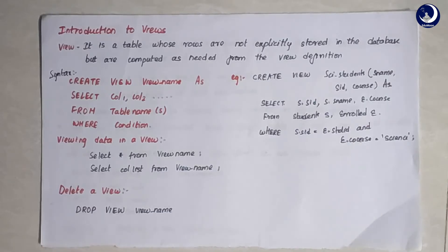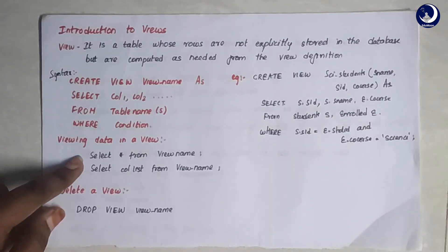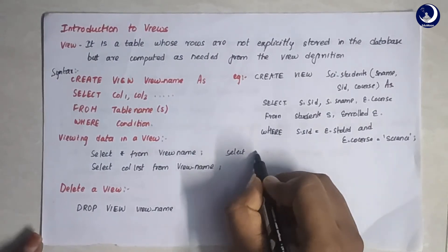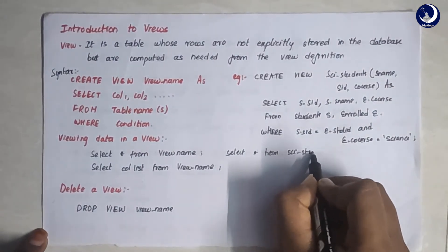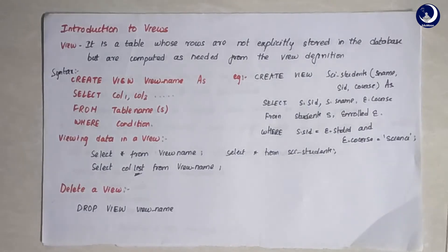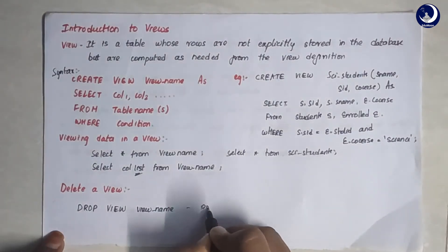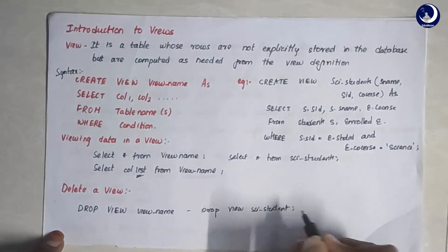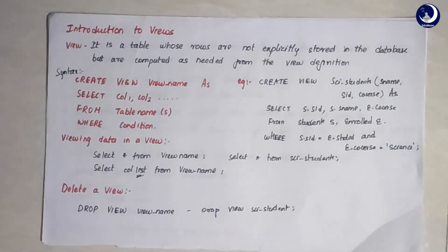Now that we have created a view, you should be able to display it. The syntax used to display a view is similarly SELECT * FROM view_name, so here it would be SELECT * FROM science_students. This will return a table containing the details of all the science students. You can also select one or two columns. To delete a view, once you have created and used it, use a DROP command: DROP VIEW view_name — in this case, DROP VIEW science_students. With this statement, the view will be deleted and no longer present.